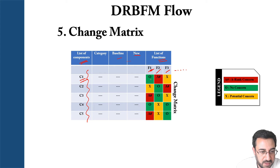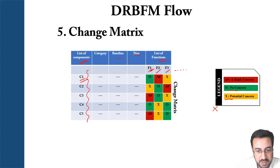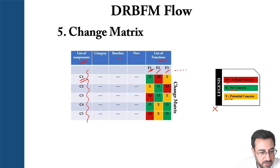You're asking: how does function F1 interacting with component C1 affect the overall progress of the system? In the legend, you use symbols to indicate the nature of each interaction — one symbol for no concern, another for a potential concern, and a third for an A-rank or very important concern.